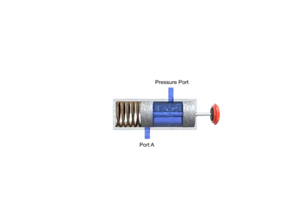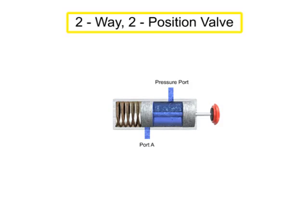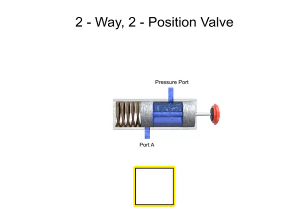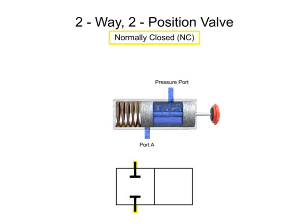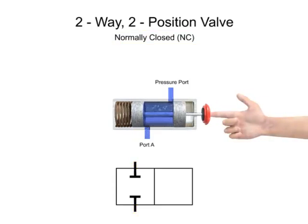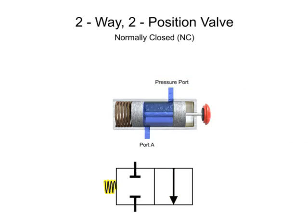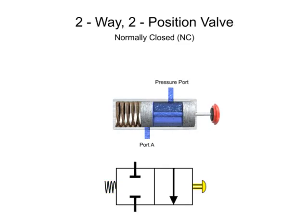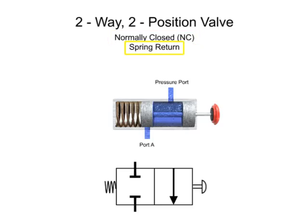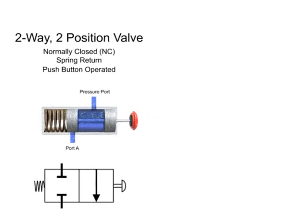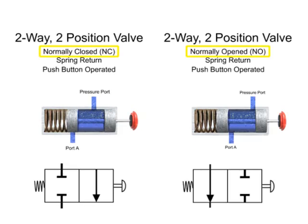Here is a similar valve to the one previously shown. It has two ports and two positions, so it is also a two-way, two-position valve. However, in the normal non-actuated position, both ports are blocked. Therefore, it is a normally closed valve. When the valve is actuated, fluid is allowed to flow from the pressure port to port A. A spring returns the valve to its normally closed position, and a push button actuates it to the open position. Therefore, this valve is a two-way, two-position, normally closed, spring return, push button operated valve. While it is similar to the previous example, the differences in the normal position make it a distinctly different valve.